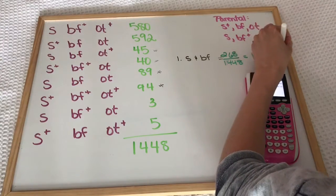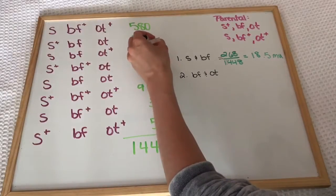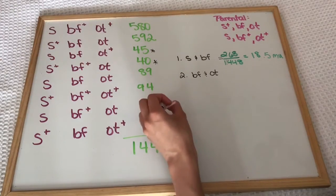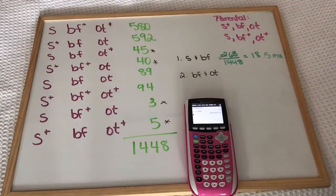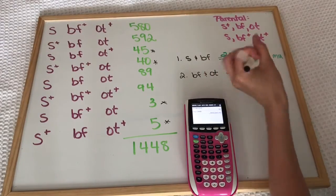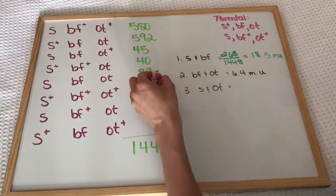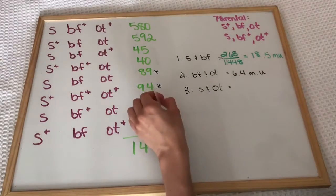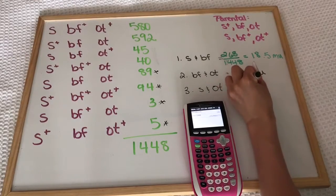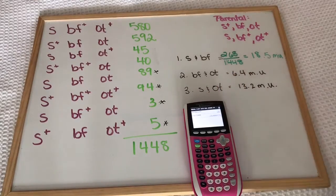Now we have to repeat this with the two other arrangements. For BF and OT, the parentals are homozygous, so we must add up 45 plus 40 plus 3 plus 5, divide that by the total offspring to get a recombination frequency of 6.4 mapping units. Lastly, S and OT are parentally heterozygous, so we add up 89 plus 94 plus 3 plus 5 to get 13.2 mapping units. Now we can really map this out.